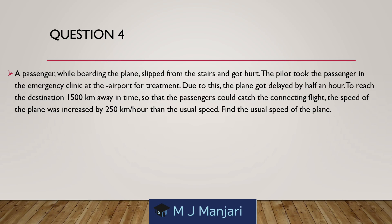Question 4. A passenger, while boarding the plane, slipped from the stair and got hurt. The pilot took the passenger to the emergency clinic at the airport for treatment. Due to this, the plane got delayed by half an hour to reach the destination 150 km away in time so that the passenger could catch the connecting flight. The speed of the plane was increased by 250 km per hour than the usual speed. Find the usual speed of the plane.